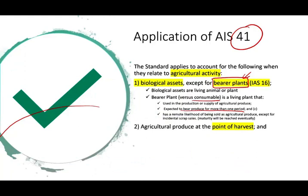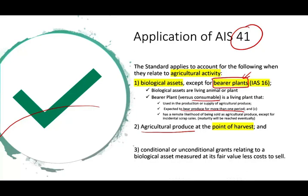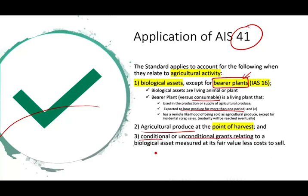IAS 41 also applies to agricultural produce — things like milk, eggs, tomatoes — what you can detach from a biological asset at the point of harvest. It also applies to conditional or unconditional government grants relating to biological assets measured at fair value less cost to sell. IAS 41 tells you when it is revenue and when you have to wait. I'm not going to cover the grant section in detail here.